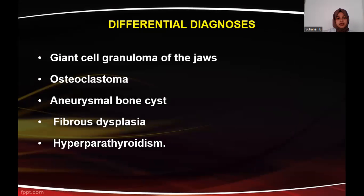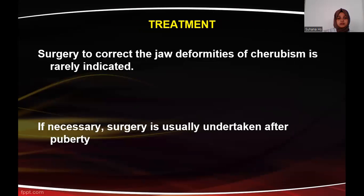The differential diagnosis of cherubism includes giant cell granuloma of the jaw, osteoclastoma, aneurysmal bone cyst, fibrous dysplasia, and hyperparathyroidism. The treatment is surgery to correct the jaw deformities, and if necessary, surgery is usually undertaken after puberty.